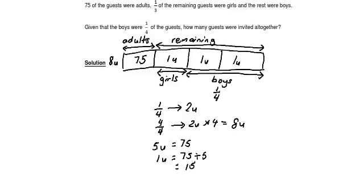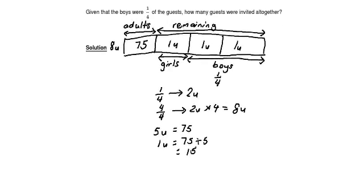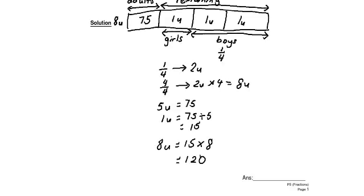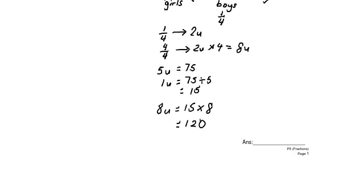How many guests were invited altogether? The total number of guests is 8 units, so 8 units equals 15 multiplied by 8, which equals 120. So that's how you solve this question — the answer is 120 guests.